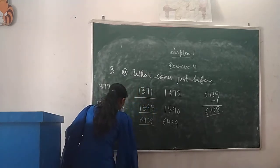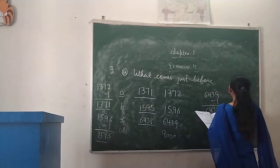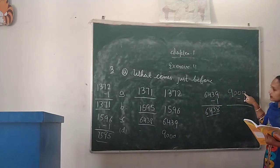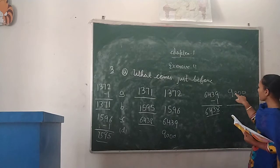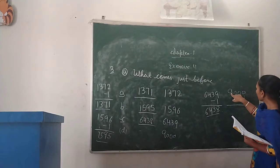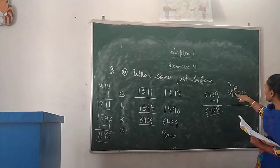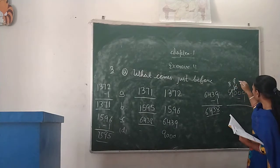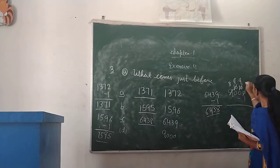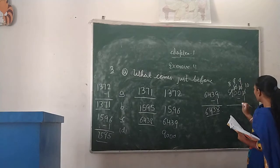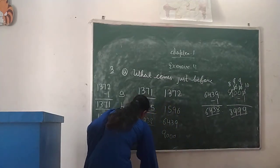Next, Part D: 9,000. We will subtract 1. Here we have 0, and we cannot subtract 1 from 0, so we take a borrow from the next digit. Each zero borrows from the next, leaving 9s. Finally 10 minus 1 is 9, then 9, 9, 8. So the predecessor is 8,999.